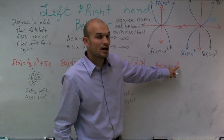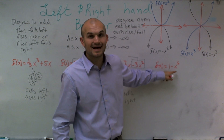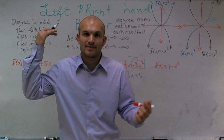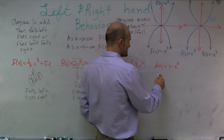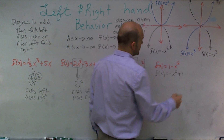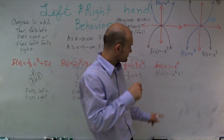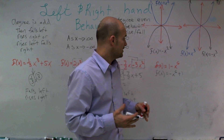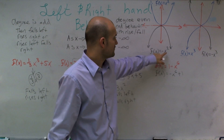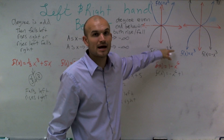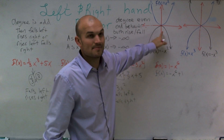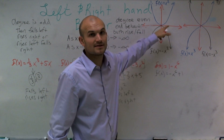Lastly, we have another term that's not in descending order. When rewritten correctly, it becomes negative x to the 6th plus 1. Now I can determine: the degree is even and the number in front is negative. Therefore it's going to represent the downward-facing parabola, and my end behavior falls to the left and falls to the right.